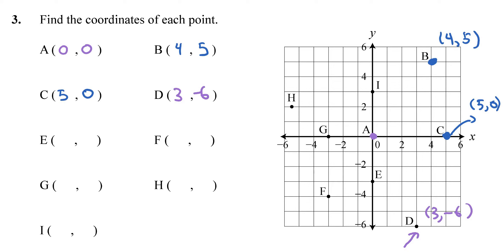Letter E: we don't go left or right, but we go down 3 units, so X is 0 and Y is negative 3 — giving us 0 comma negative 3. Letter F: go left 3 units and down 4 units, so F is negative 3 comma negative 4.